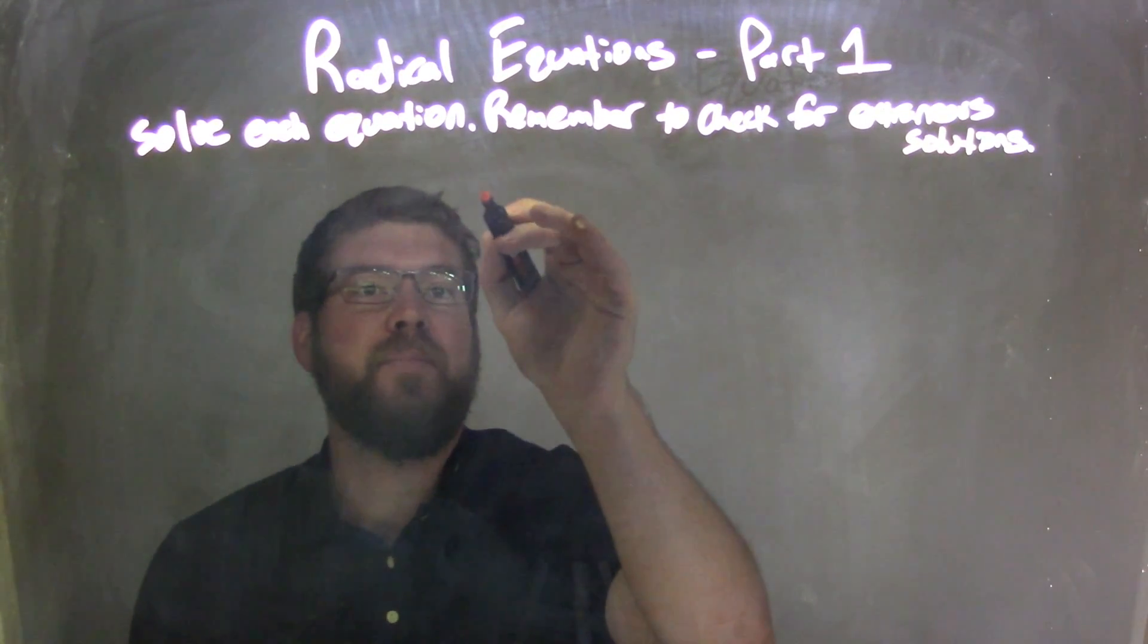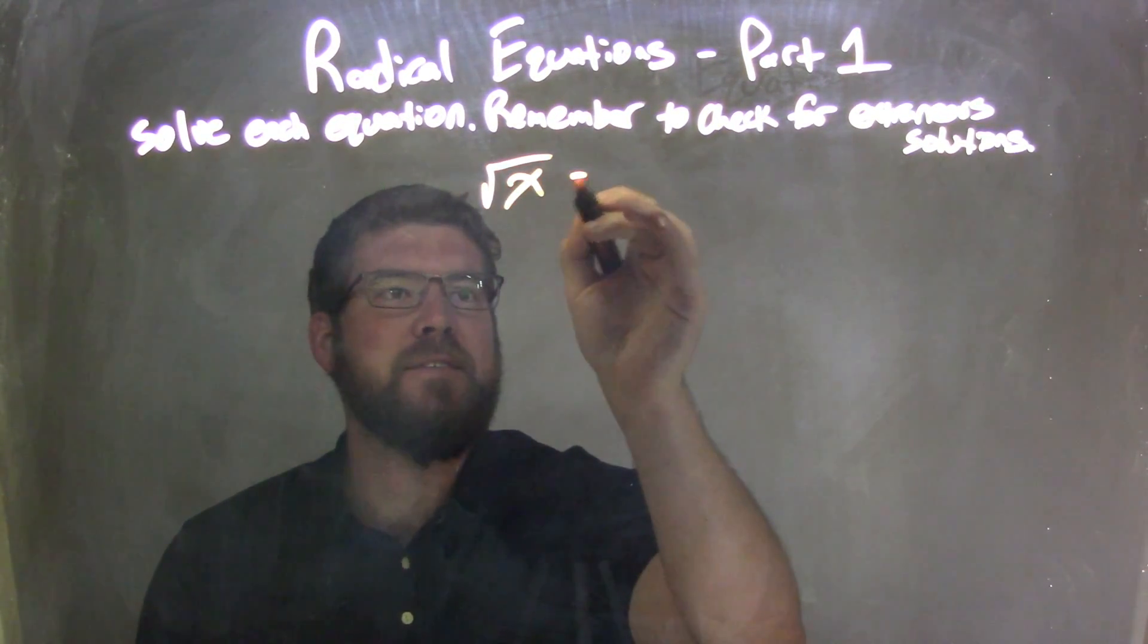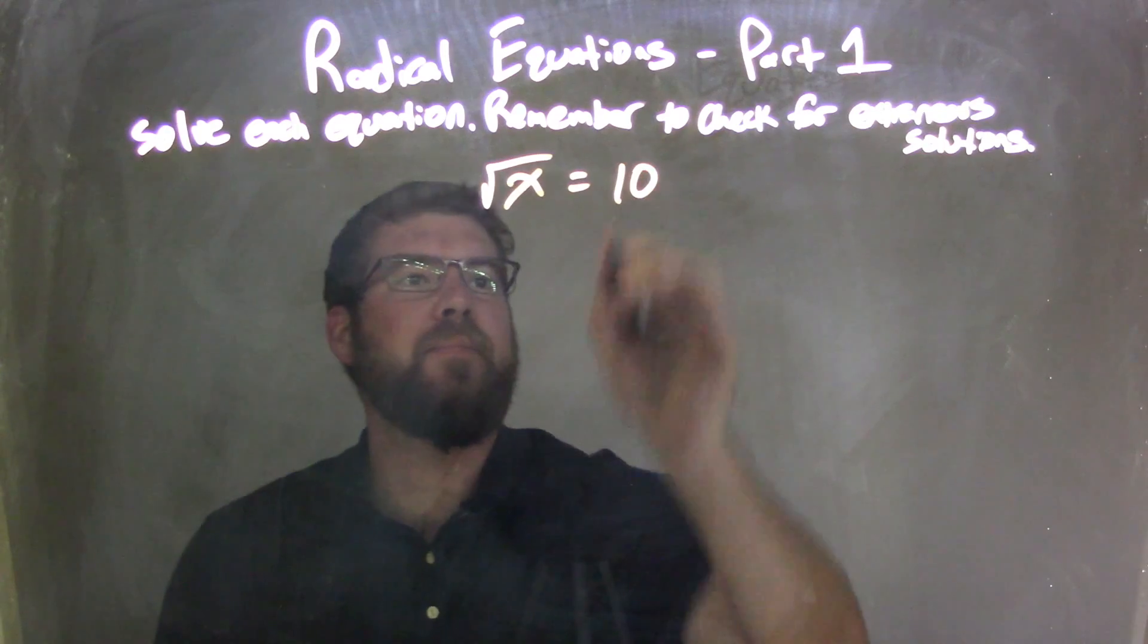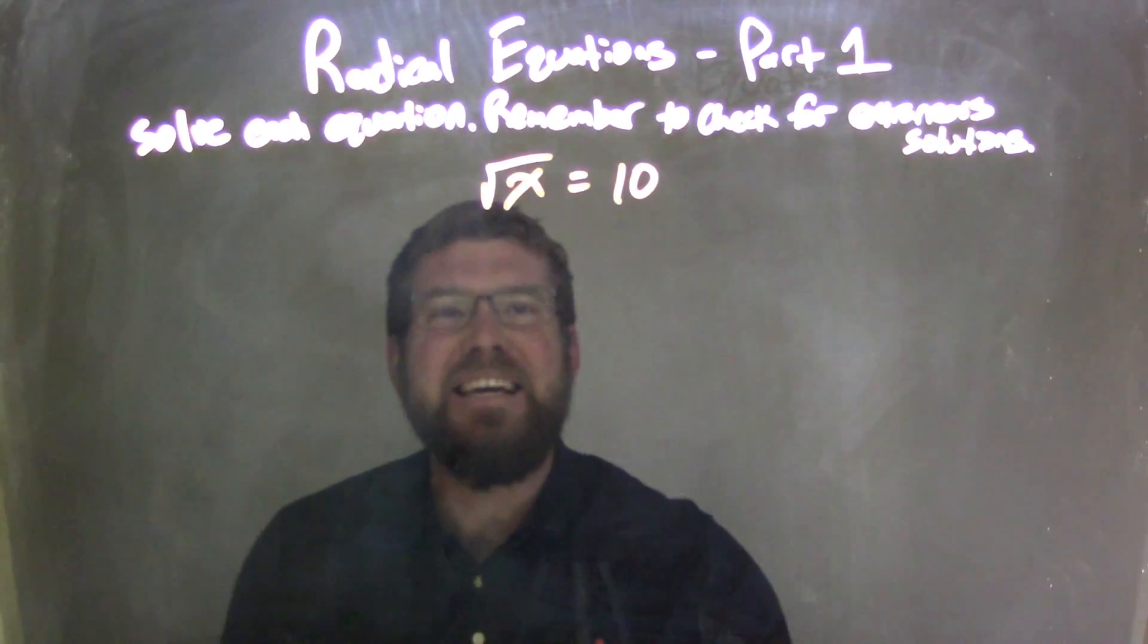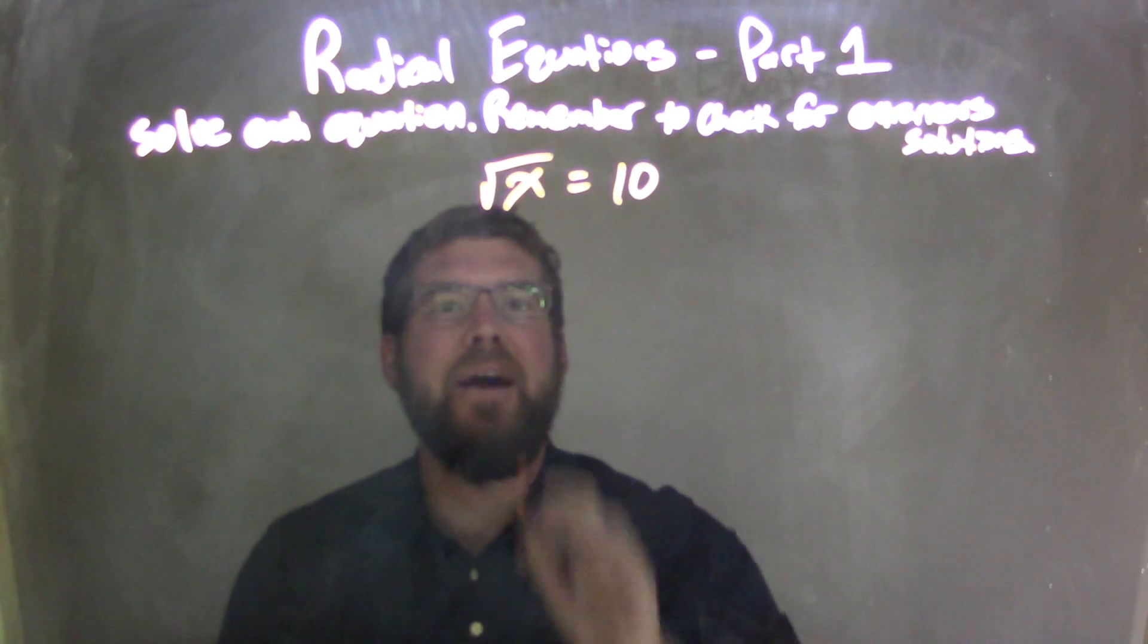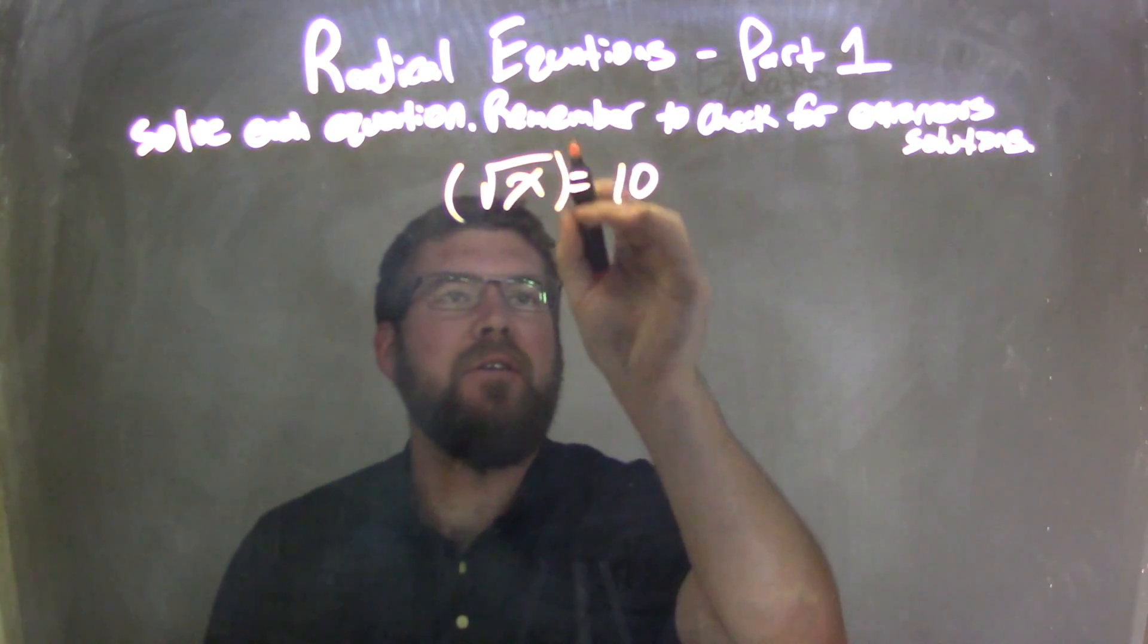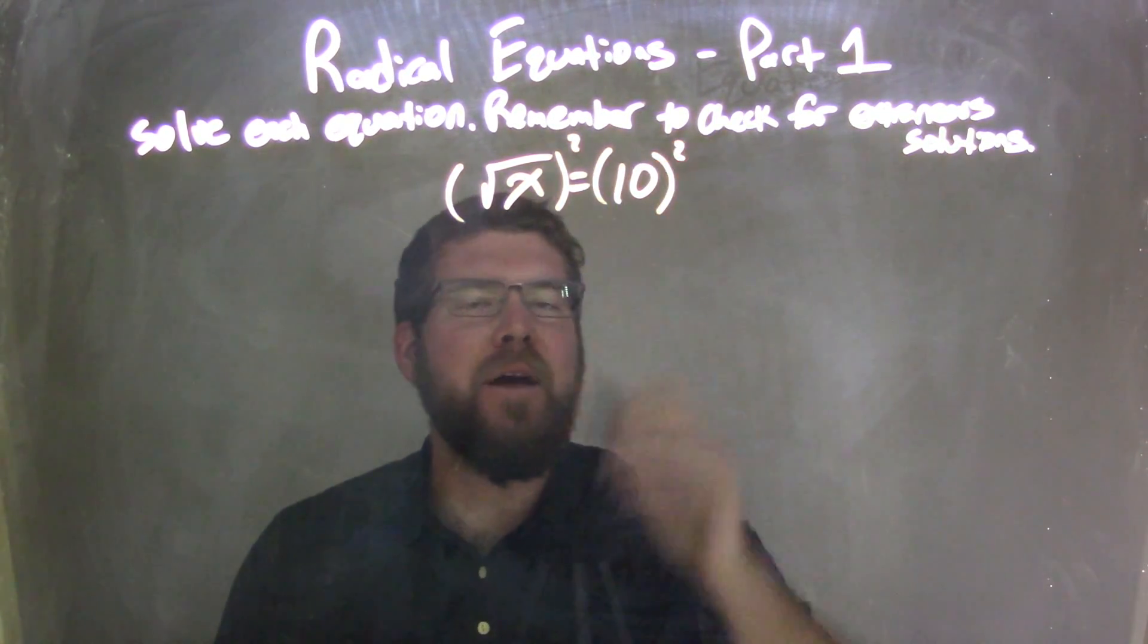So, if I was given this equation, square root of x equals 10. Well, to get rid of that square root, I want to isolate x. What I need to do is square both sides. Square both sides of the equation.